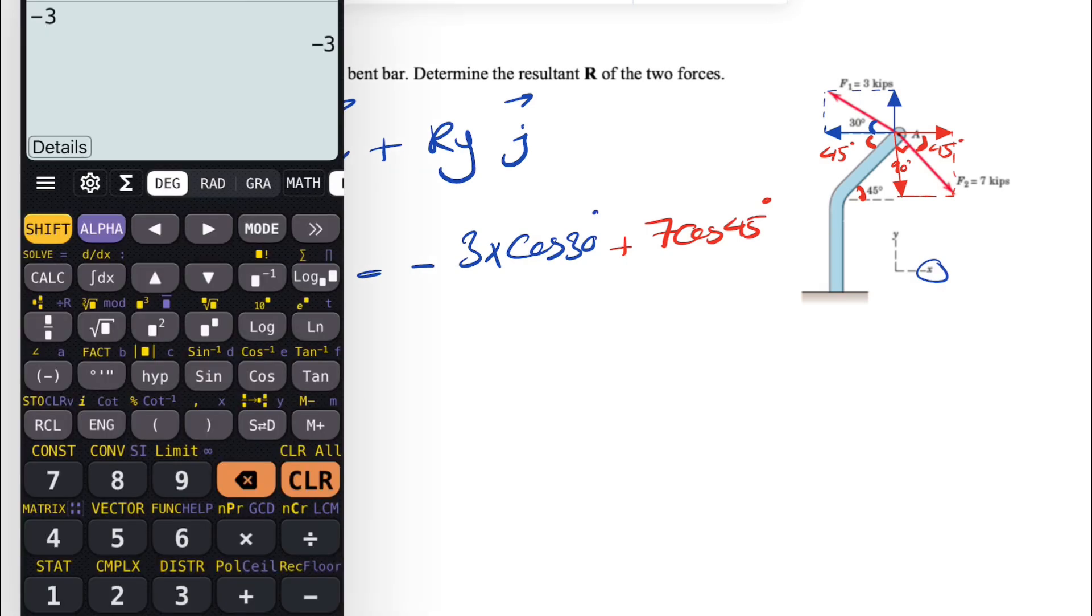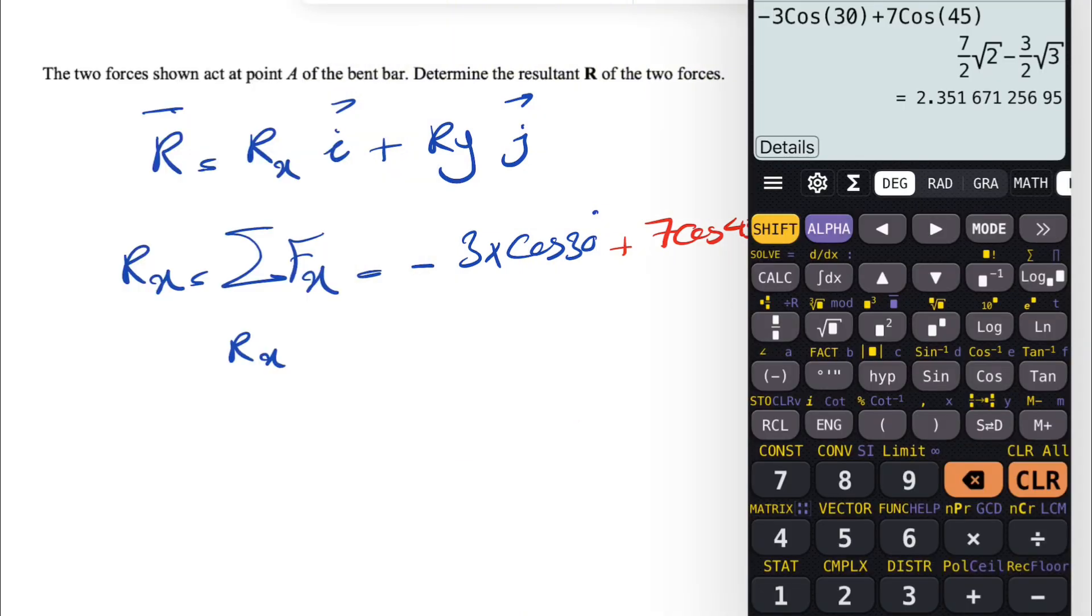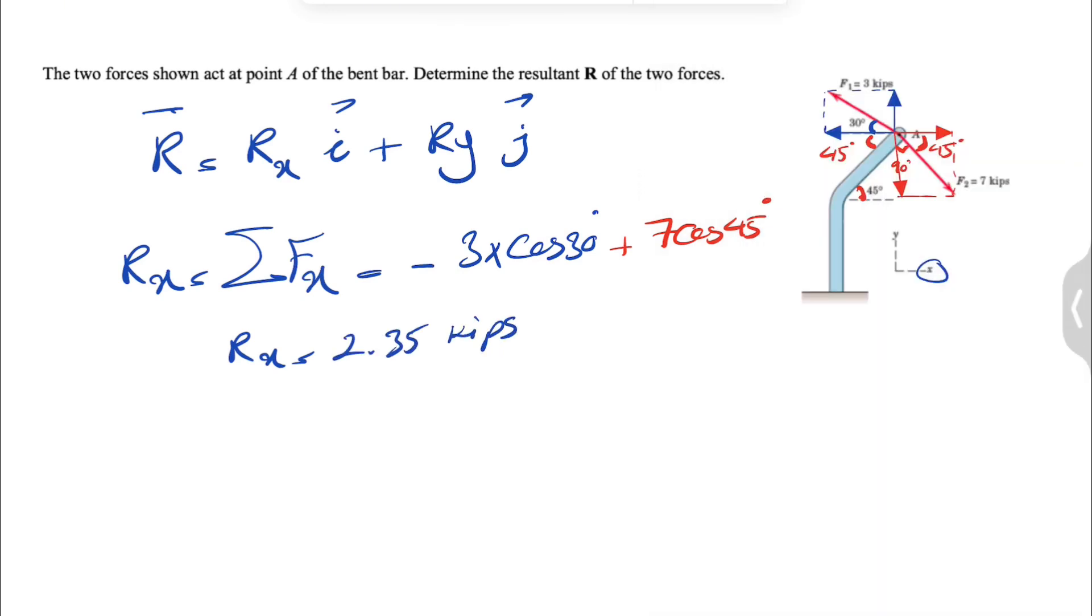Let's calculate this: minus 3 cosine of 30 plus 7 cosine of 45. Our Rx is 2.35 kips. That was our X component.